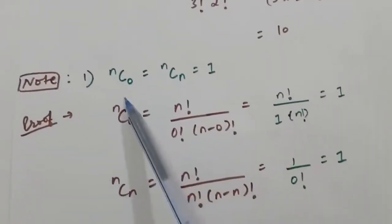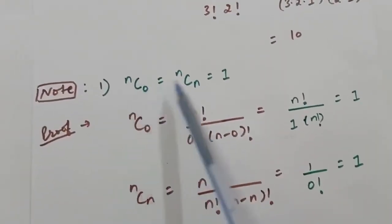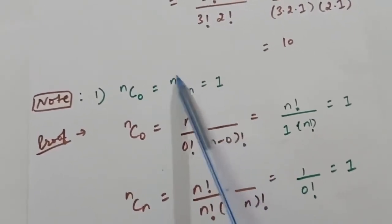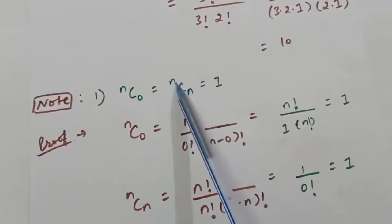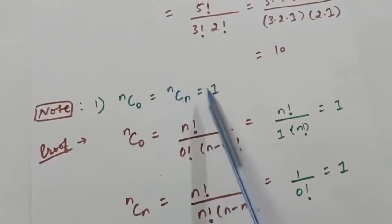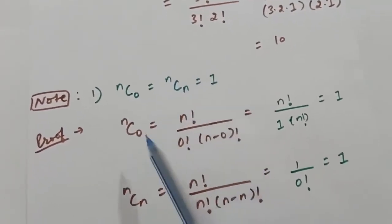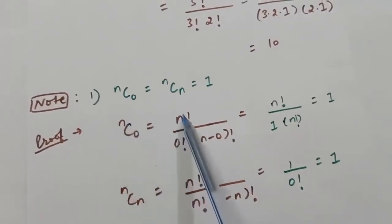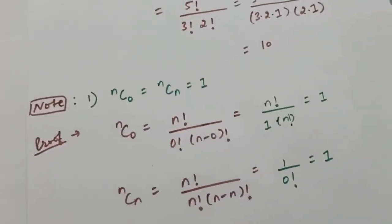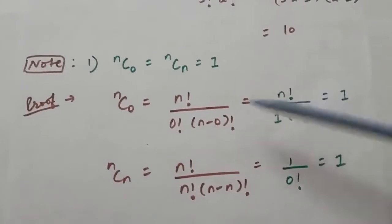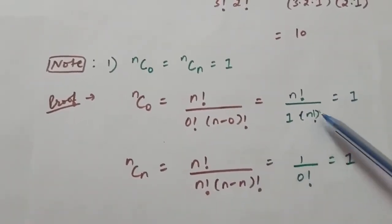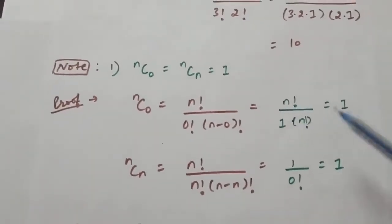Now there are some notes on combinations. nC0 = nCn = 1, no matter what the value of n is (n belongs to whole numbers). To see why nC0 = 1: nC0 = n! / (0! × (n−0)!) = n! / (1 × n!) = 1, because 0! = 1 and the n! cancels out.